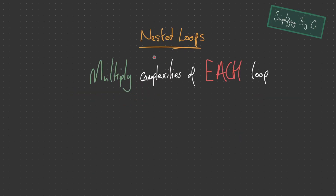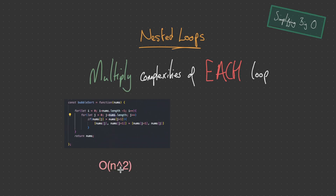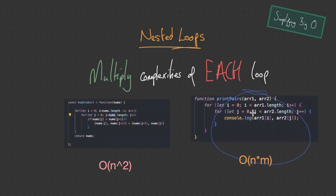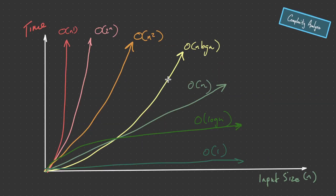Next is nested loops — multiply the complexities of each loop. Bubble sort is O(N × N) or O(N²) because we loop through the nums array twice. With print pairs, we have a nested for loop iterating through two different arrays, so we multiply those together for O(N × M). That was a compact overview of some of the most common time complexities using Big O notation — how we calculate them and how they relate to one another, which is essential when discerning the most optimal algorithms. Go back over the video, understand it, and start implementing this knowledge. Hope you've enjoyed the video.